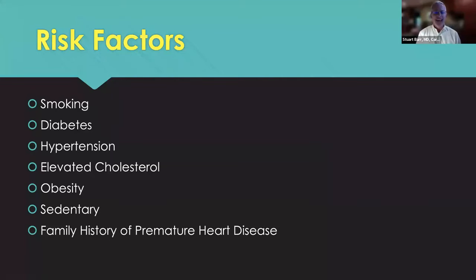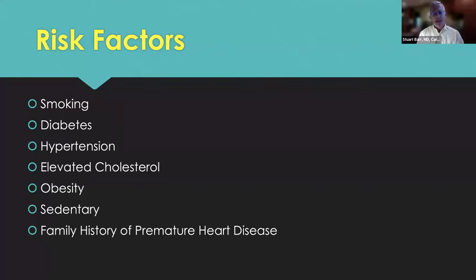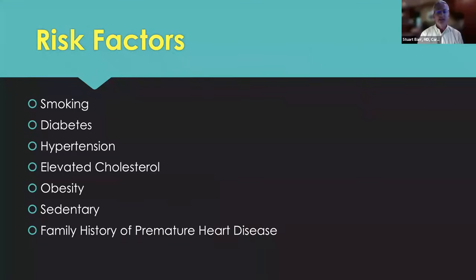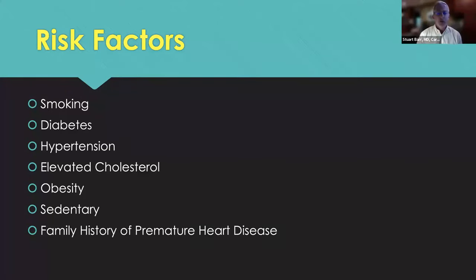That was a quick introduction to heart anatomy. Now I want to jump into risk factors. Risk factors are a statistical thing. I could tell you that I have obese, diabetic smokers who've never had a heart attack, and I've had thin vegetarian marathon runners who have had a heart attack. Everything in my business is an on-average kind of thing. These are the established risk factors for heart disease, and I'll go through them one by one.